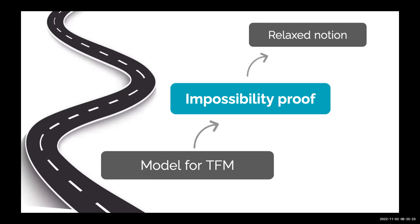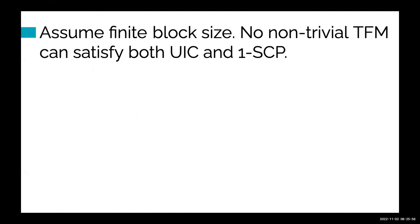How do you enforce the inclusion rule? That's the goal of mechanism design — we can't force anything, but we design incentives so the miner is always incentivized to follow it. The impossibility theorem states: assume the block size is finite. Then no non-trivial transaction fee mechanism can satisfy both UIC and 1-SCP. Notably, we only need two of the three properties to rule it out, and only need the miner to collude with a single user — making the lower bound stronger.